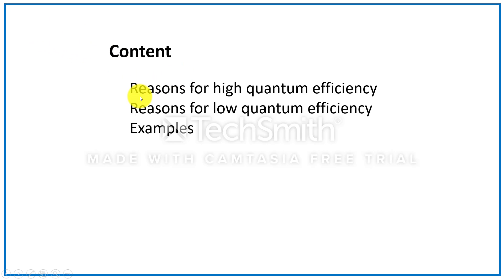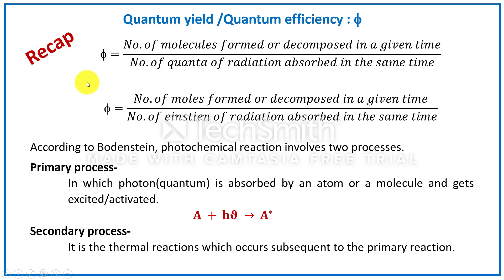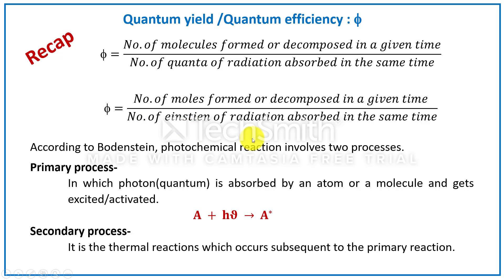In this session, you will come to know the reasons for high quantum efficiency and the reasons for low quantum efficiency. From the previous session, you have understood what is quantum yield or quantum efficiency. It is the ratio of number of molecules formed or decomposed in a given time to the number of quanta of radiation absorbed in the same time, or the ratio of number of moles formed or decomposed in a given time to the number of Einsteins of radiation absorbed in the same time.